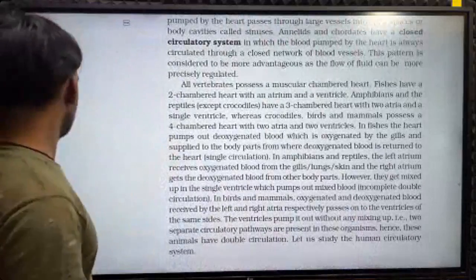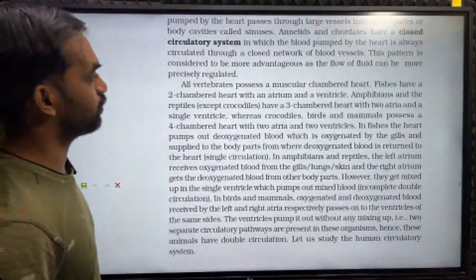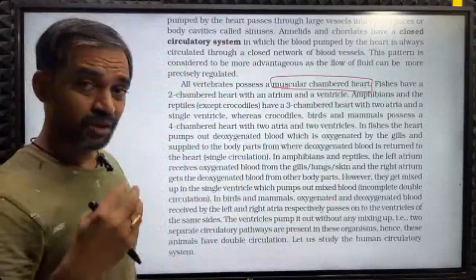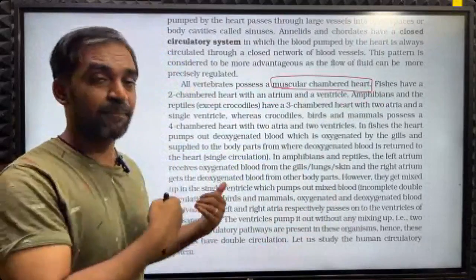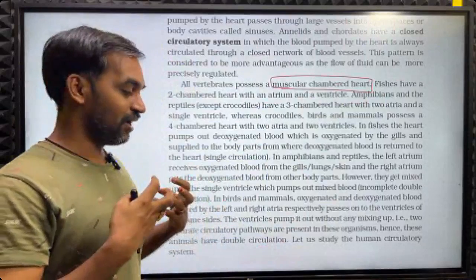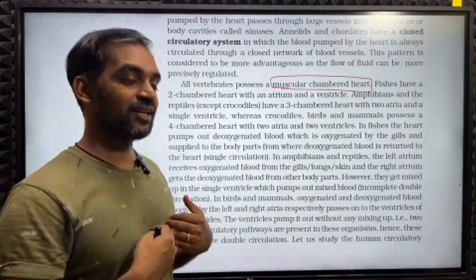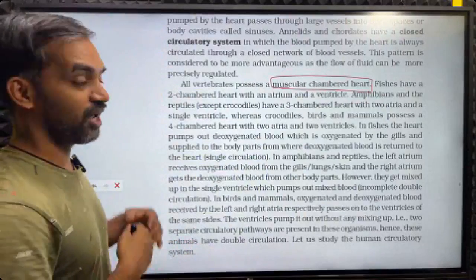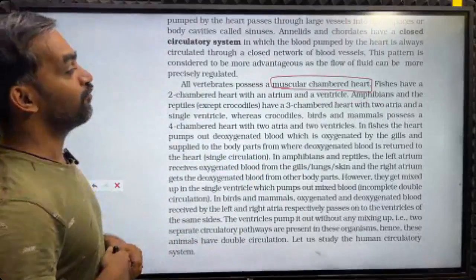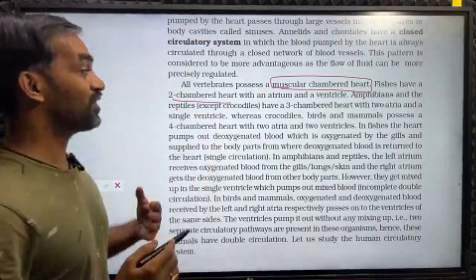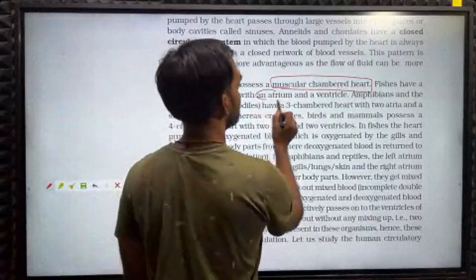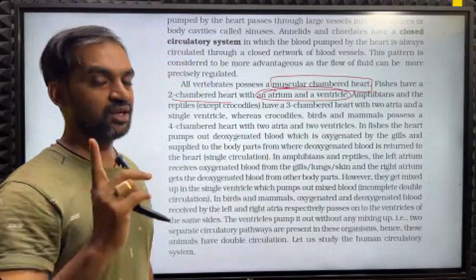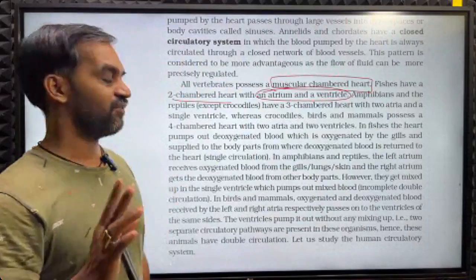All vertebrates possess a muscular chambered heart. Fishes have a two-chambered heart with one atrium and one ventricle.